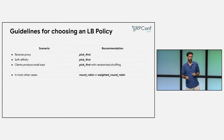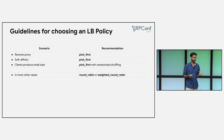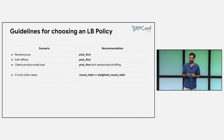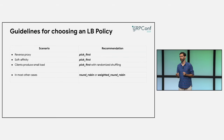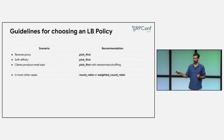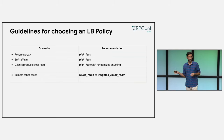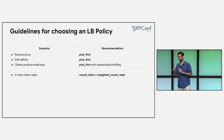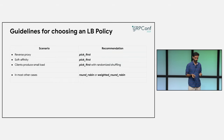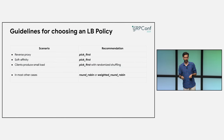Here are some high-level guidelines for choosing an LB policy. If your clients are going through a reverse proxy, then pick first makes sense. Or if you want soft affinity — where all client RPCs reach the same server backend because it's caching client-specific data — then pick first makes sense again. In the case where clients produce very small load compared to the overall server load, pick first with randomized shuffling works. In most other cases, round robin or weighted round robin would work for you.